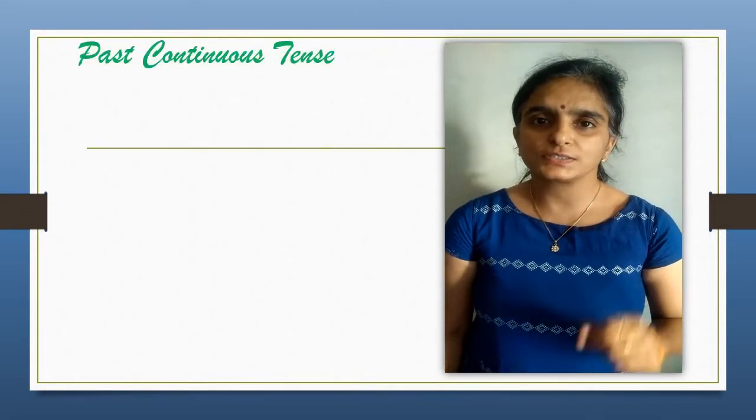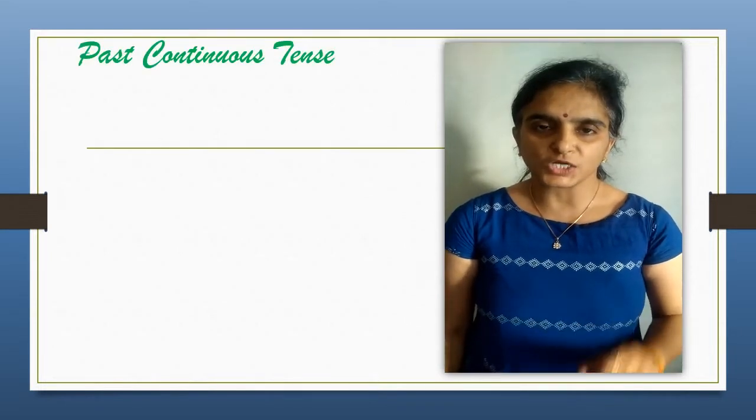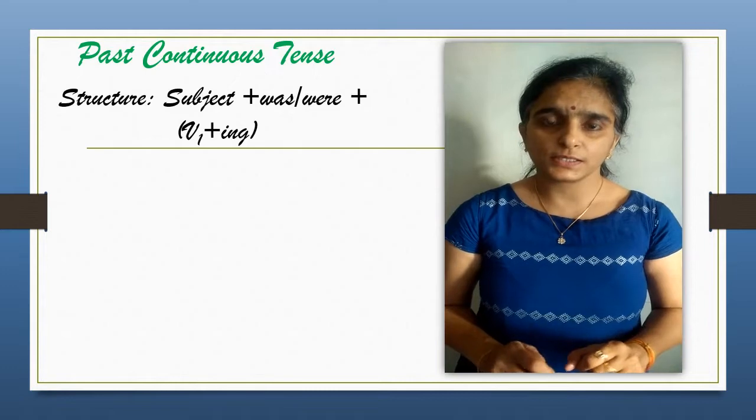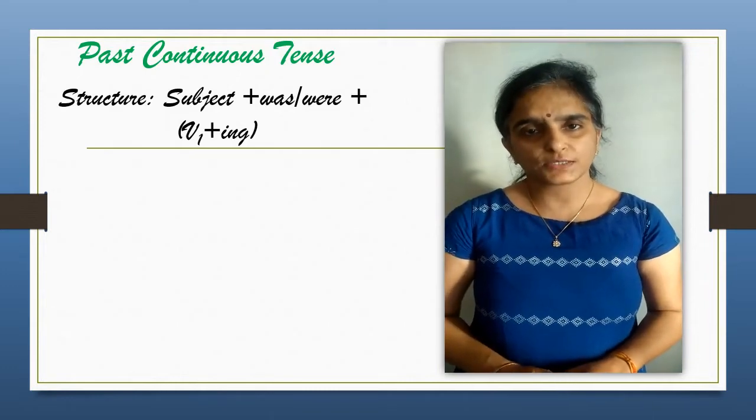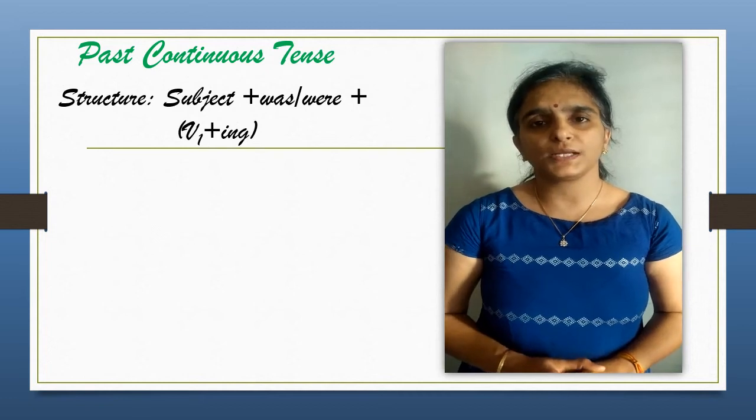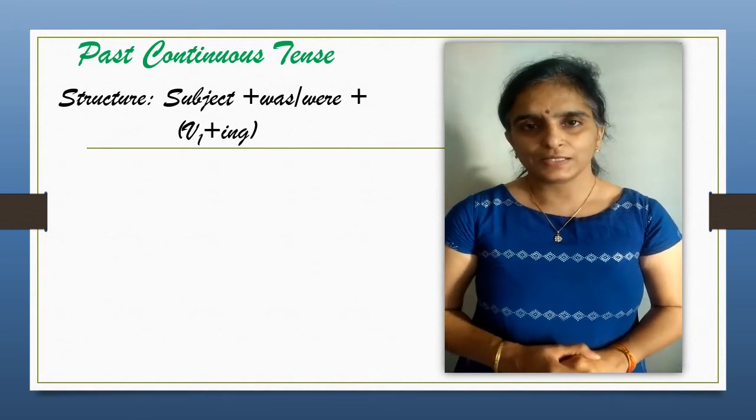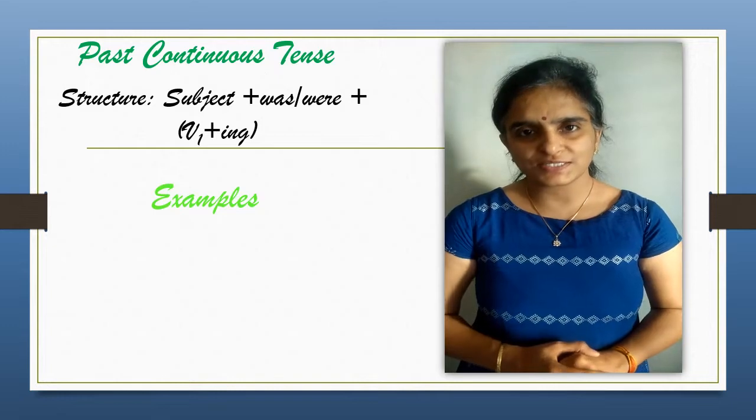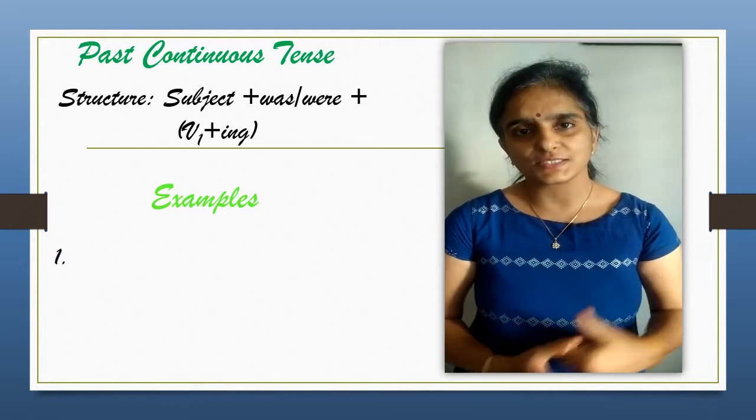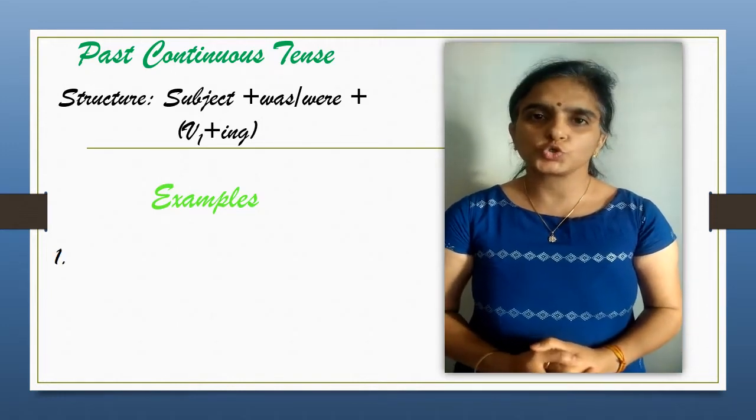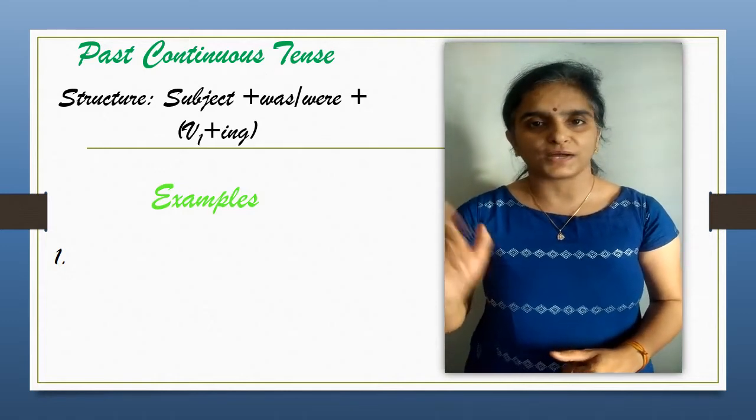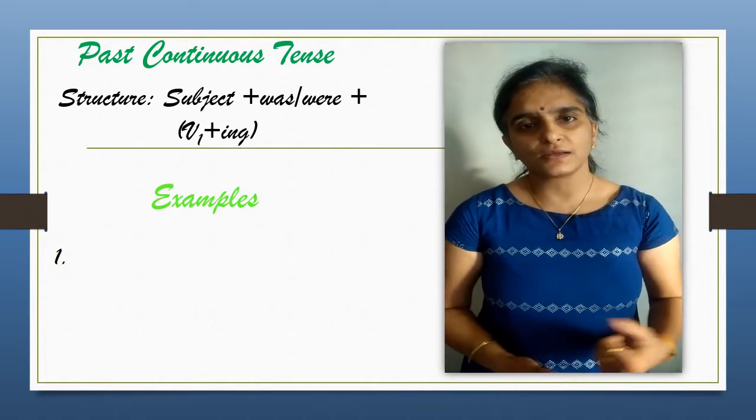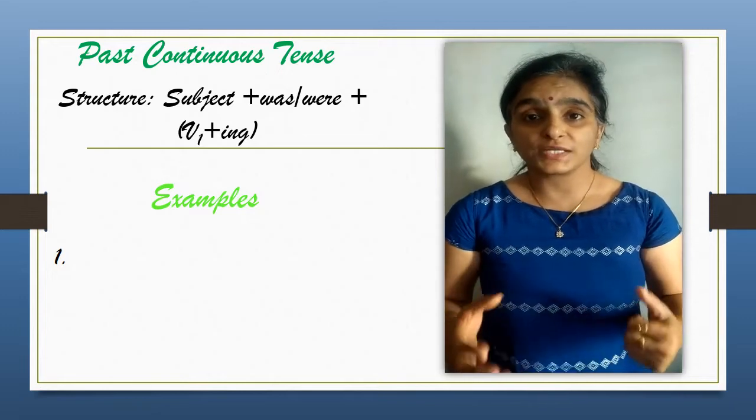Past Continuous Tense. The structure is subject plus was or were plus first form of verb plus ing. Let's study it through two instances. First instance: it is used to show an action in progress at some moment in the past, like it was raining heavily.